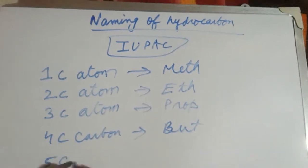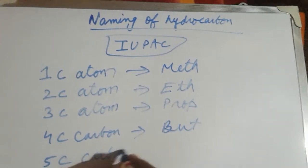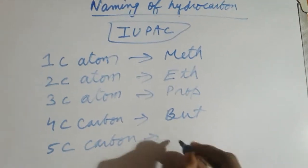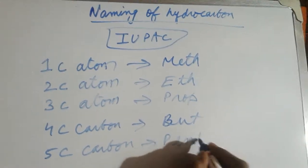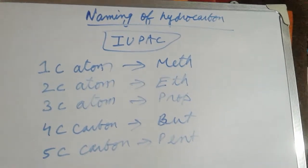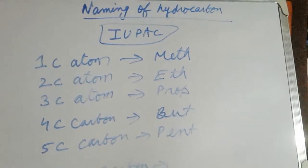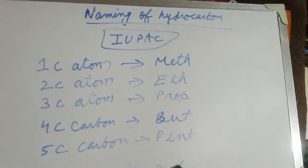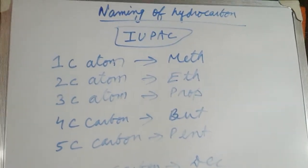If there are five carbon atoms, it's indicated by 'pent,' and so on. Ten carbon atoms are indicated by 'dec.'